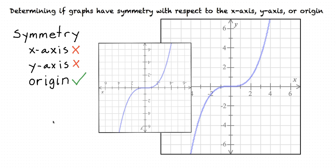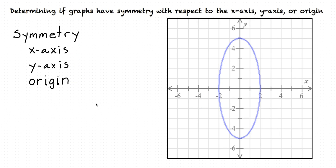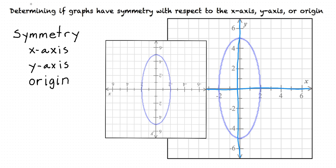Can a graph have symmetry with respect to both axes and the origin? Sure. Here's a graph that has symmetry with respect to the x-axis and the y-axis, and if we rotate it 180 degrees, it looks the same. So it has symmetry with respect to the x-axis, the y-axis, and the origin.